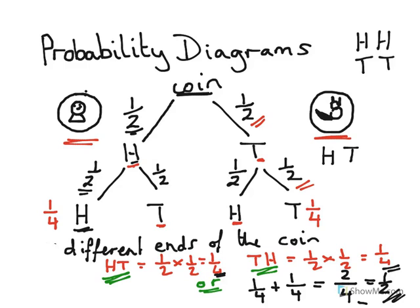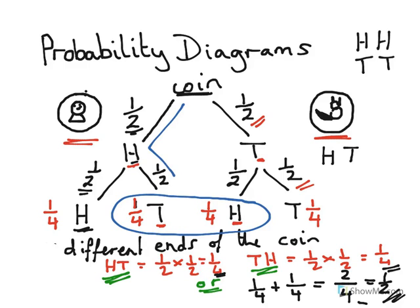Is this sensible? Yes, it is. The probability of head-tail is a quarter, and the probability of tail-head is also a quarter. These two probabilities add together because we could have gone down either route of the tree — this way or that way. When there are two different routes, we add those probabilities together.